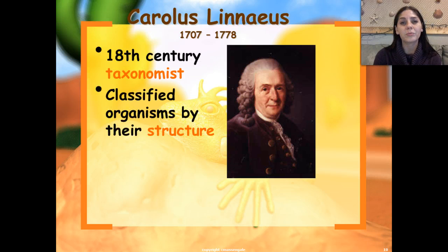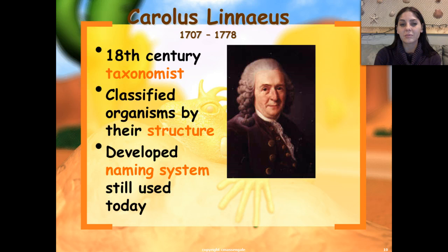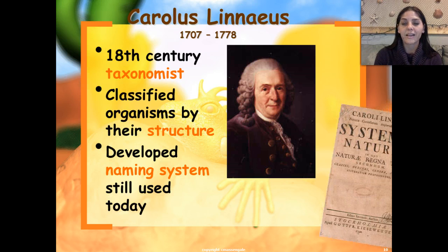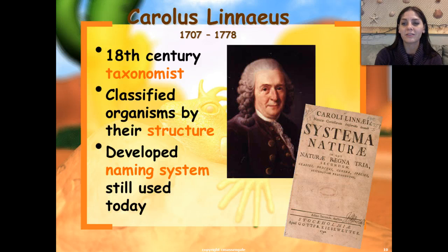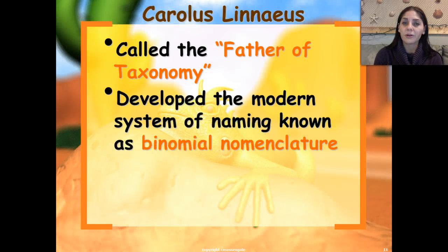Carolus Linnaeus is the one who came up with the classification system that we use today. He was an 18th century taxonomist, and he classified organisms based on their structure. He developed the naming system that we currently use today, and he also wrote the book Systema Naturae. In this book, he basically classified as many organisms as he knew existed and gave them a two-name name. So Carolus Linnaeus is called the father of taxonomy.